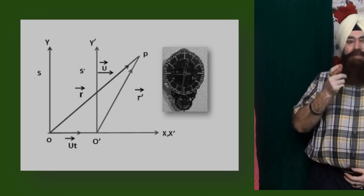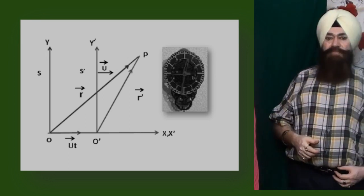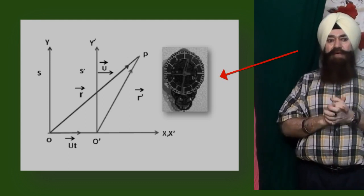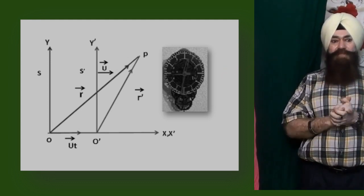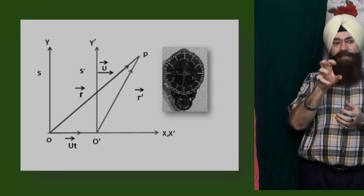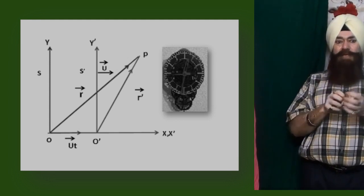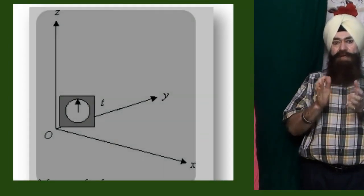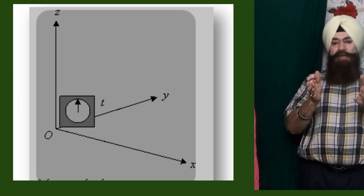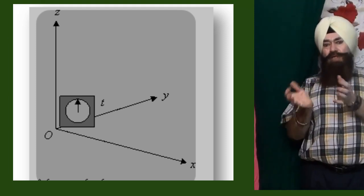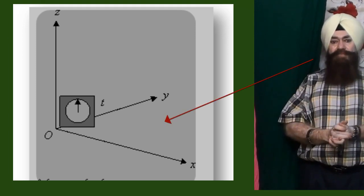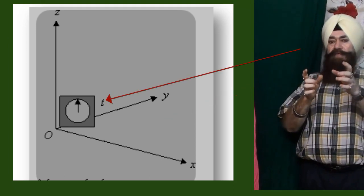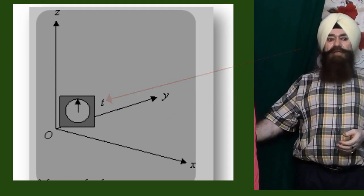So in the classical 3D configuration, a frame of reference is simply the place from where you are making observations. It usually consists of all the spatial dimensions like x, y, z, plus a clock to measure the time dimension.